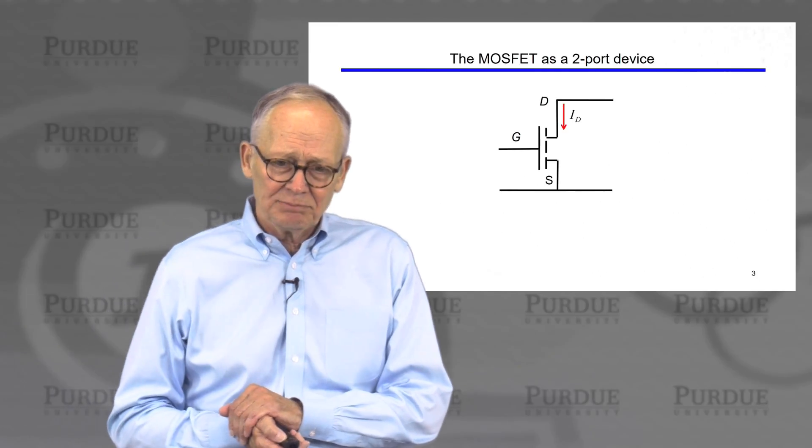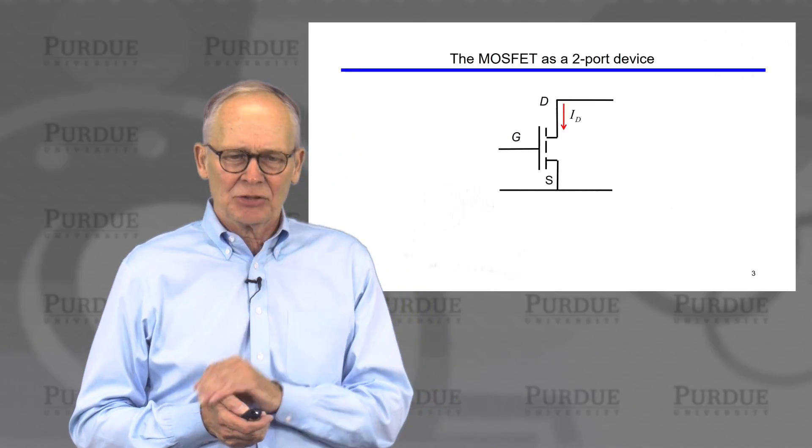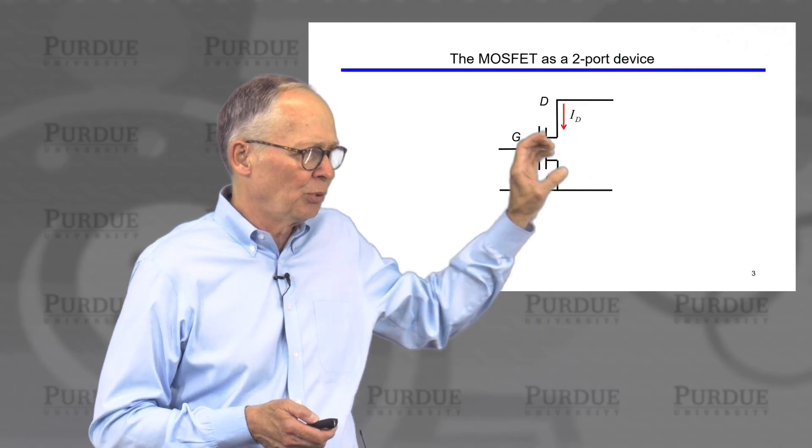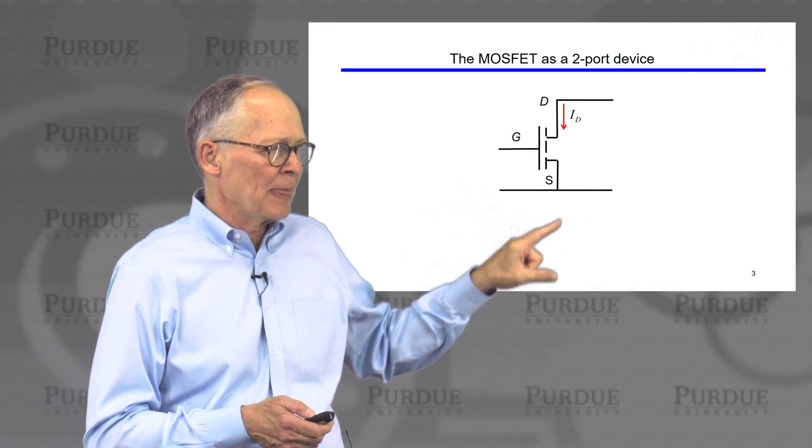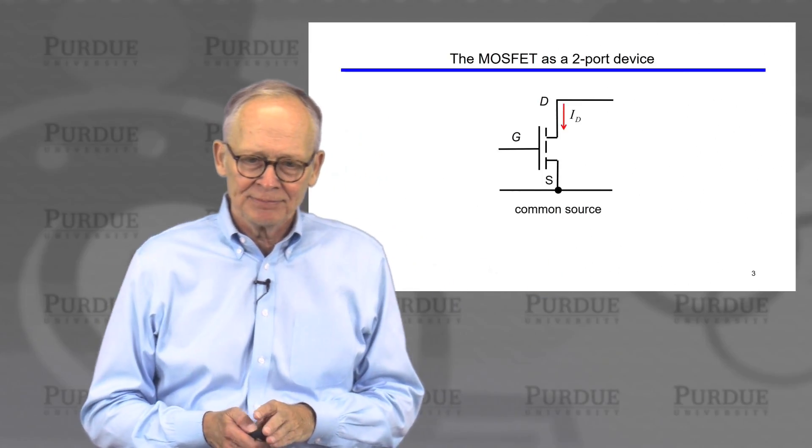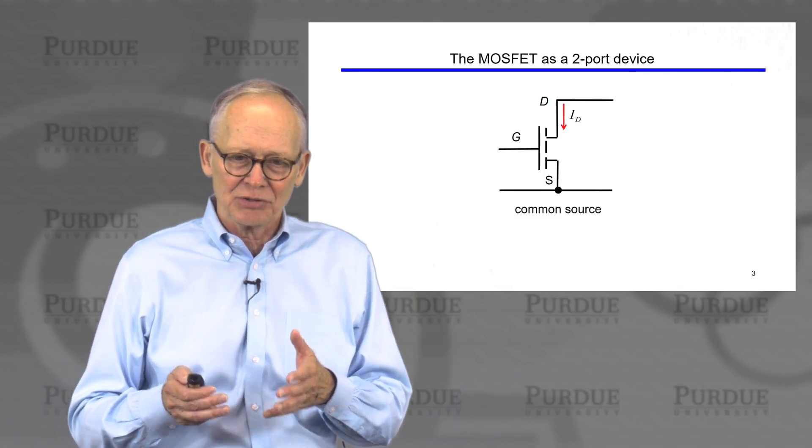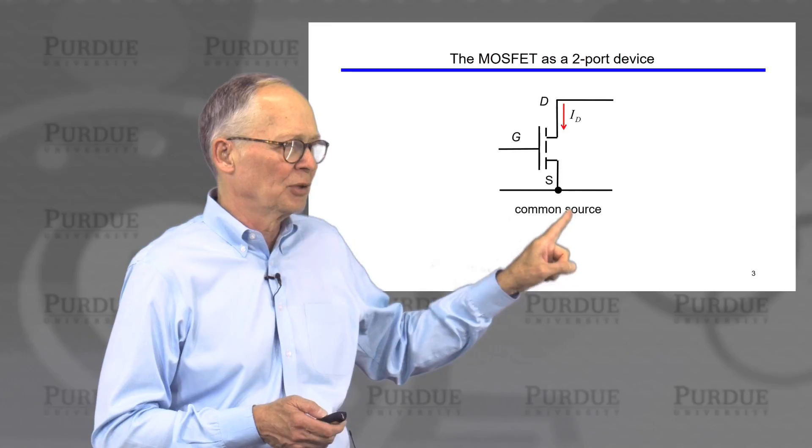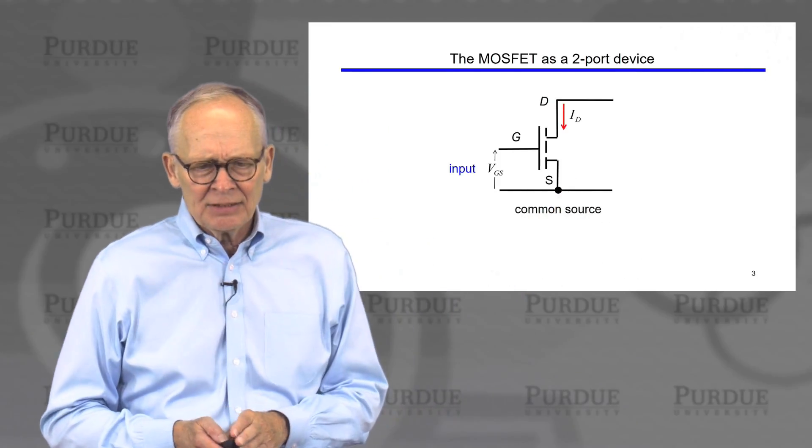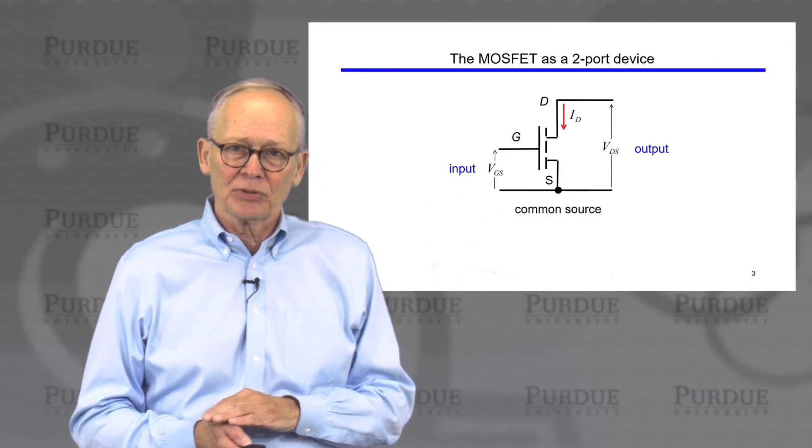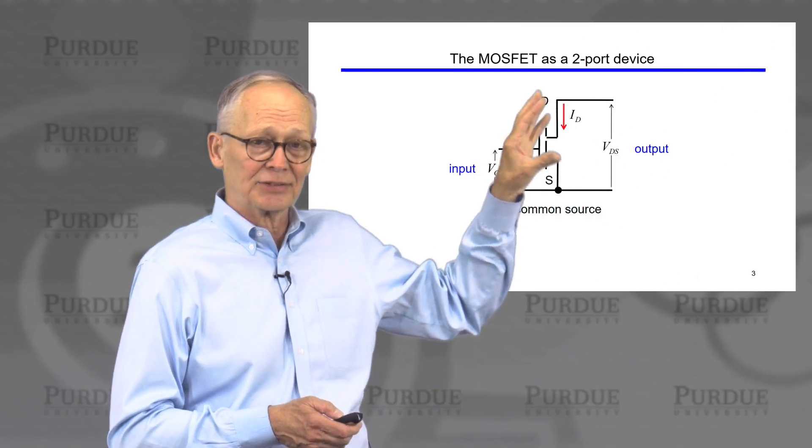Now we take a transistor which generally has three terminals. We like to think of it as a two-port device. It's got an input port and it has an output port. In order to have two leads on the input and two on the output, there's one terminal that has to do double duty. We've just done one illustration here where we've had the source terminal be common between the input and output. So the input in this configuration is the gate to source voltage. The output is the drain to source voltage. The output current is the current through the drain.